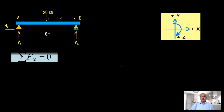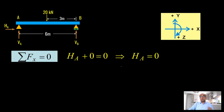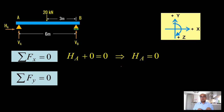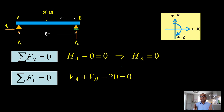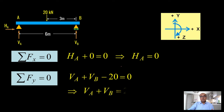First, summation of horizontal forces equal to zero. We have the HA reaction and no horizontal load applied on this beam, so the horizontal reaction is going to be zero — HA equals zero. Summation of vertical forces equal to zero: we have the point load of 20 kilonewtons and the two reactions VA and VB. VA and VB are acting upward, so they are positive. The 20 kilonewtons acts downward, so it is negative. Therefore VA plus VB minus 20 equals zero, which gives us VA plus VB equal to 20 kilonewtons.